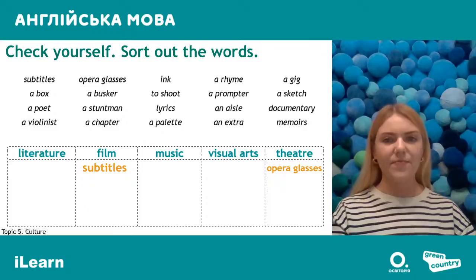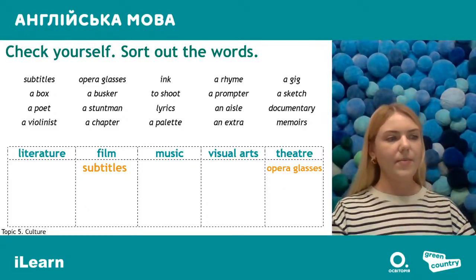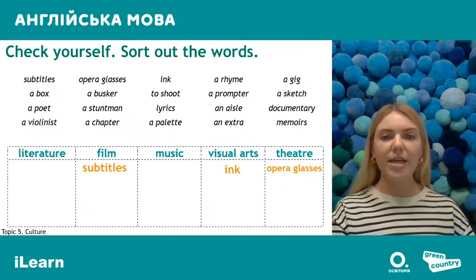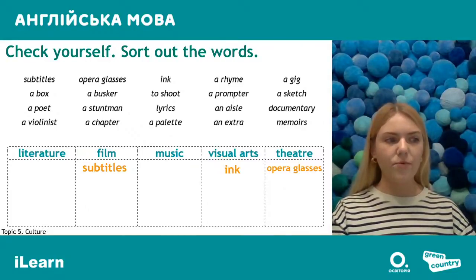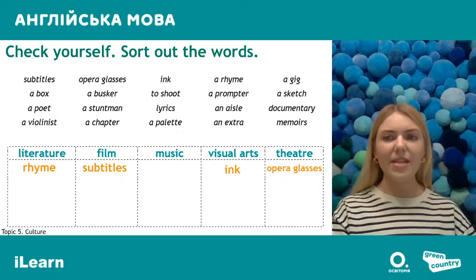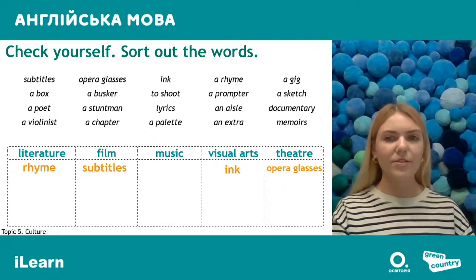'Ink' — чорнило — is connected to visual arts, because painters can use ink to make pictures. Then 'rhyme' — рима — it's about poetry and goes to literature. 'Gig' is a synonym to a concert — it's one more word to say concert — and it's about music.